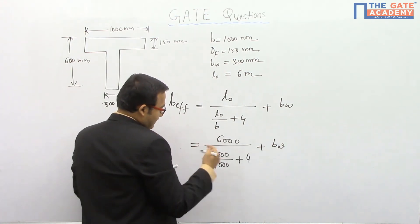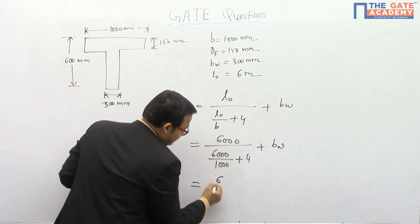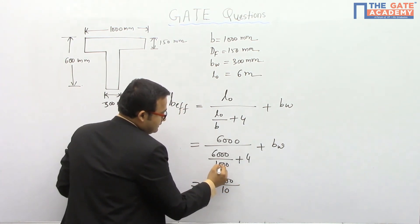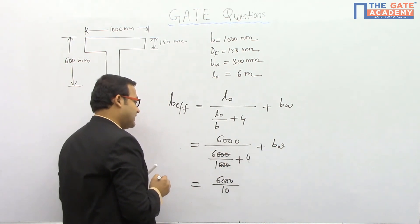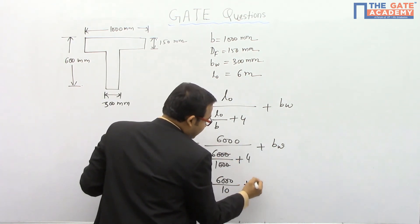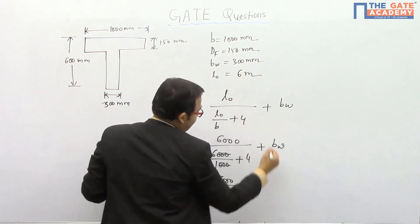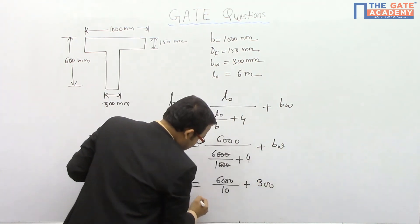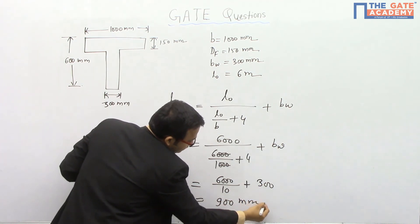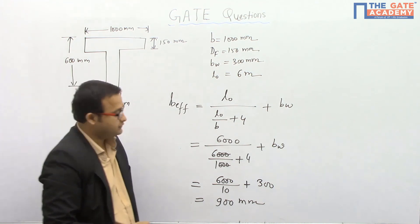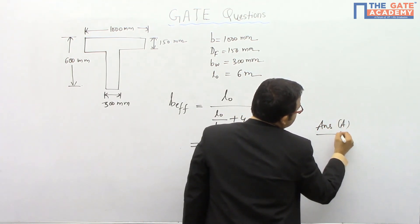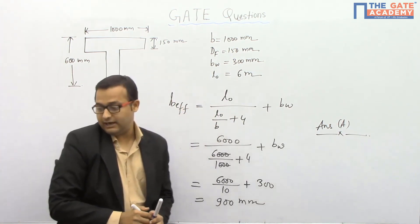So you see here, we are getting 6000 divided by 10. These three zeros cancel, so 6 plus 4 is 10, plus BW. BW is 300 mm, so 600 plus 300, the answer is 900 mm. So four options were given, so option number A is the correct answer. For this particular problem, answer is A, 900 mm.